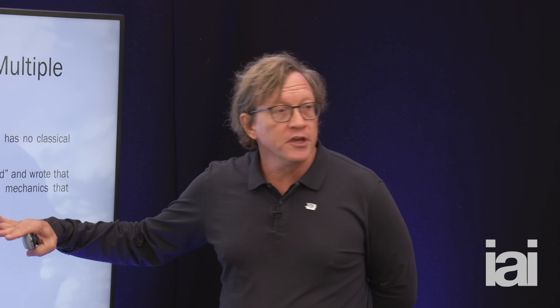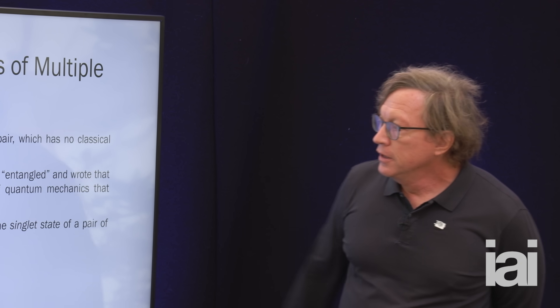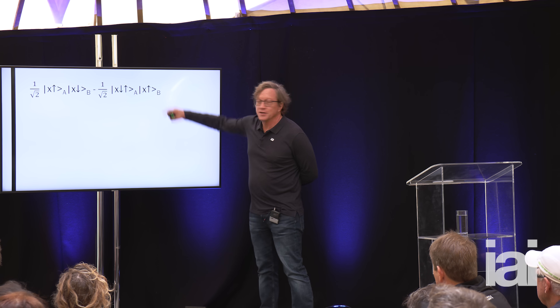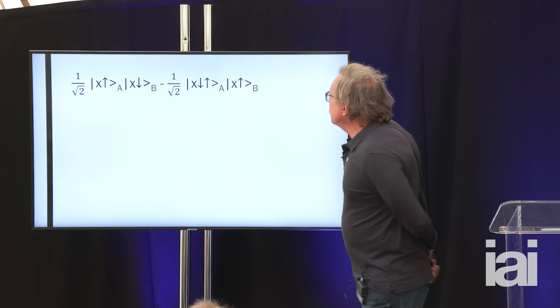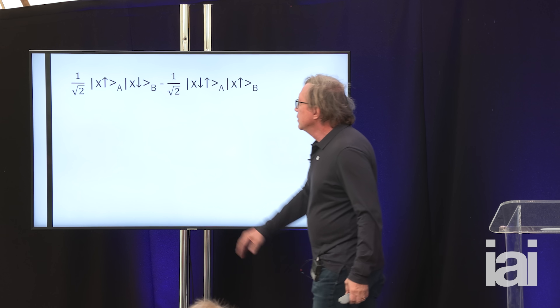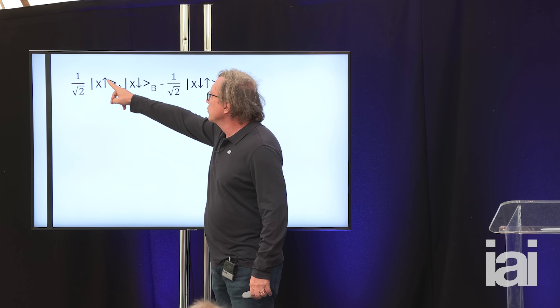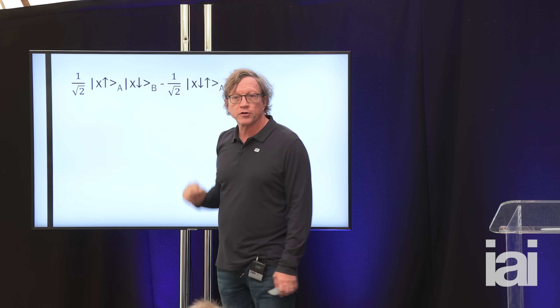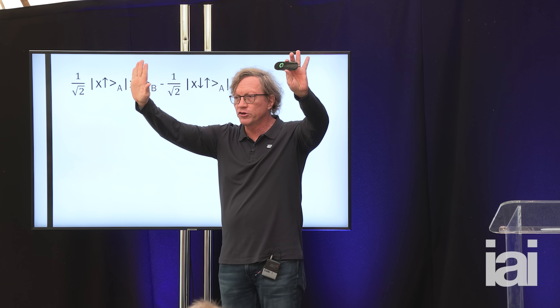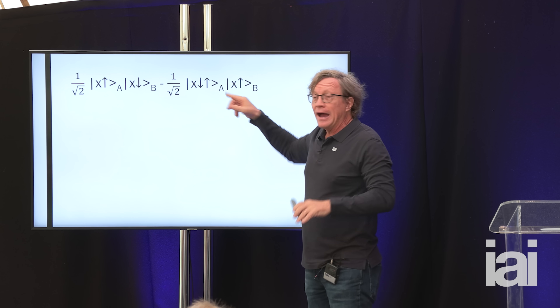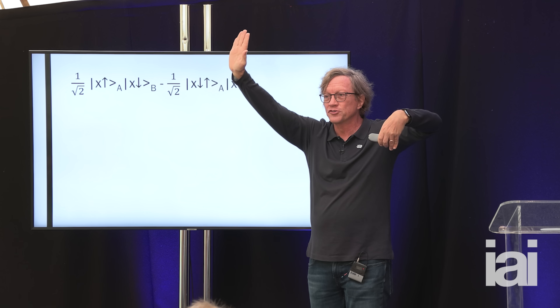Right now we're going to talk about a single entangled state of a pair of particles called the singlet state. This is the mathematical representation. This is the product state — the state where Alice's particle is X spin up and Bob's particle is X spin down. So if they both check in the X direction, Alice would see up and Bob would see down. This other state is where Alice would see down and Bob would see up. Those are just product states.